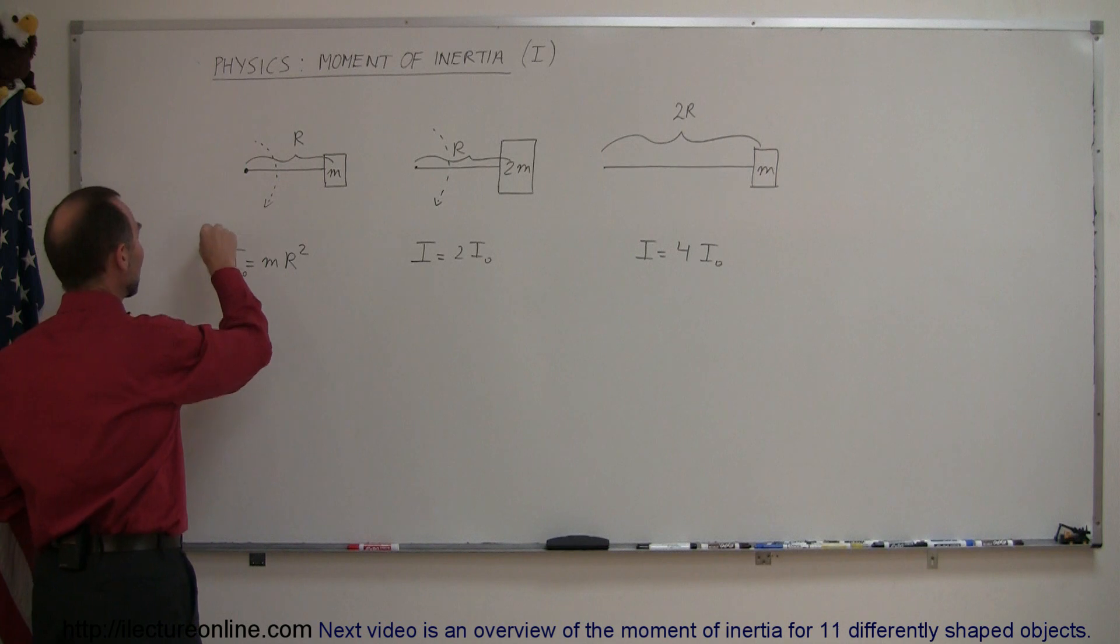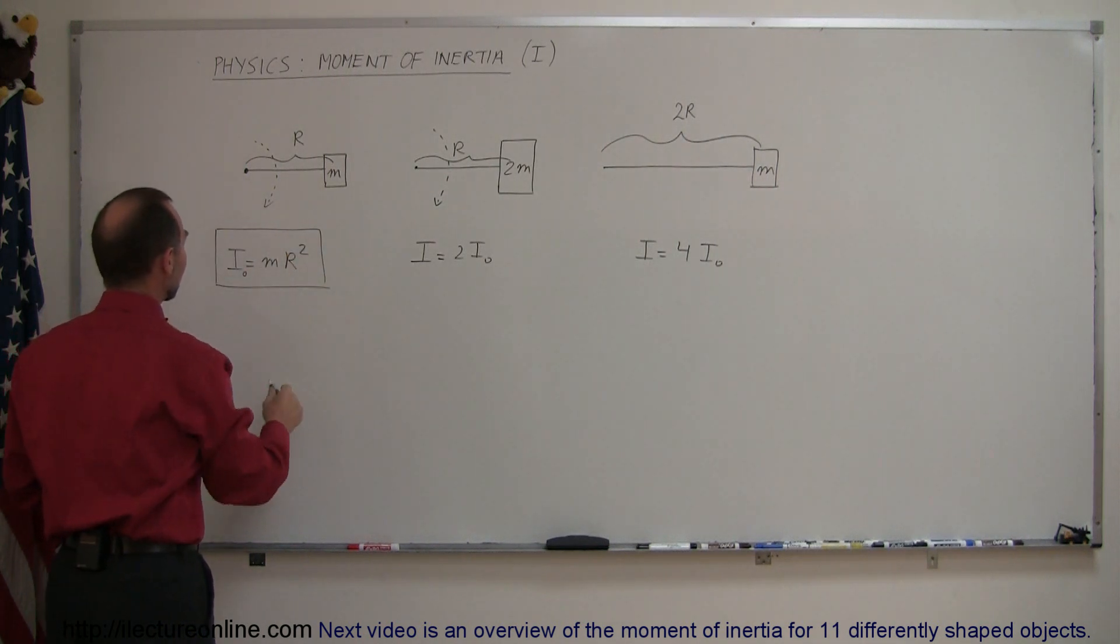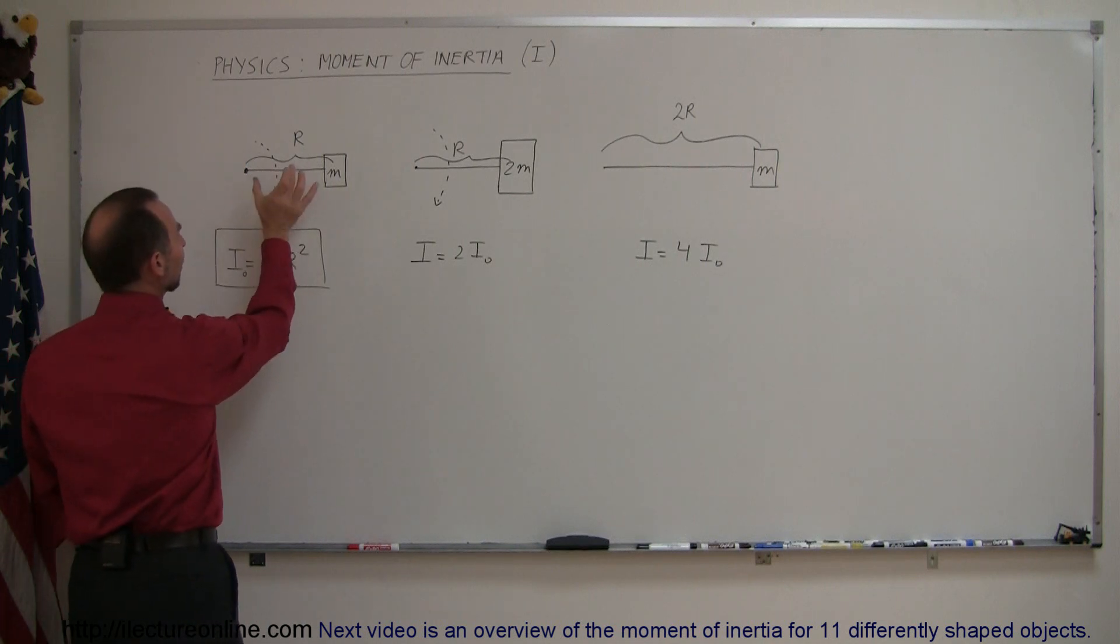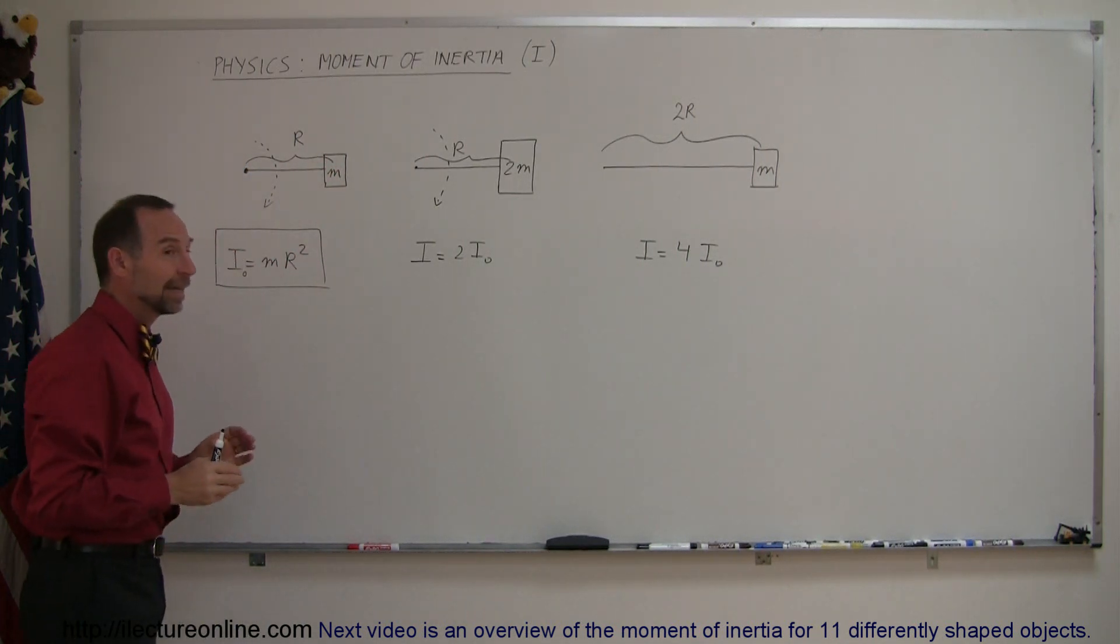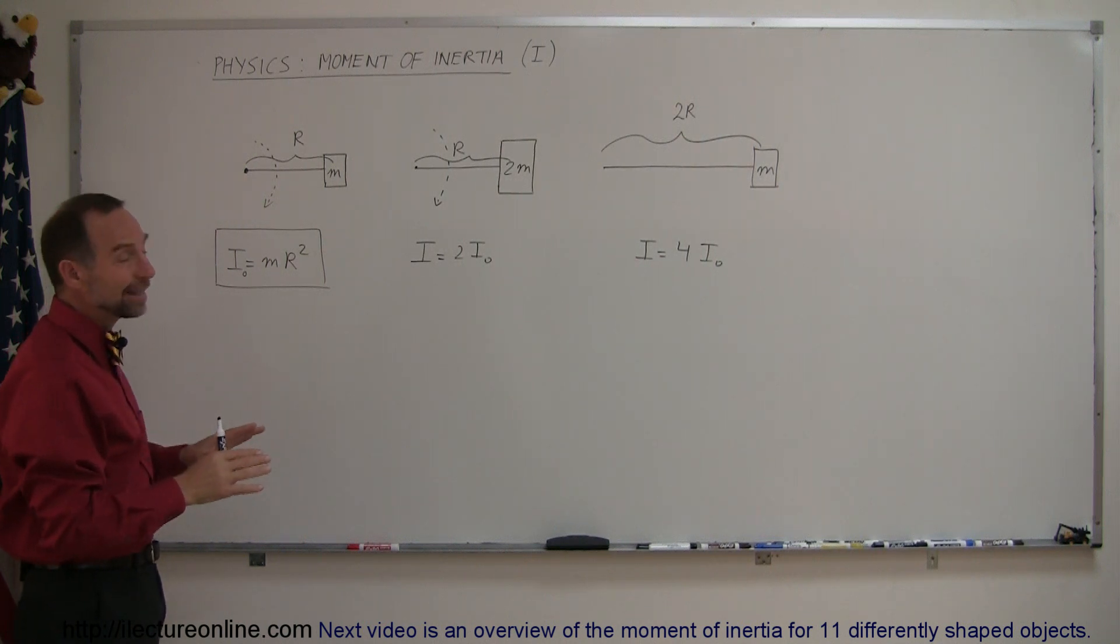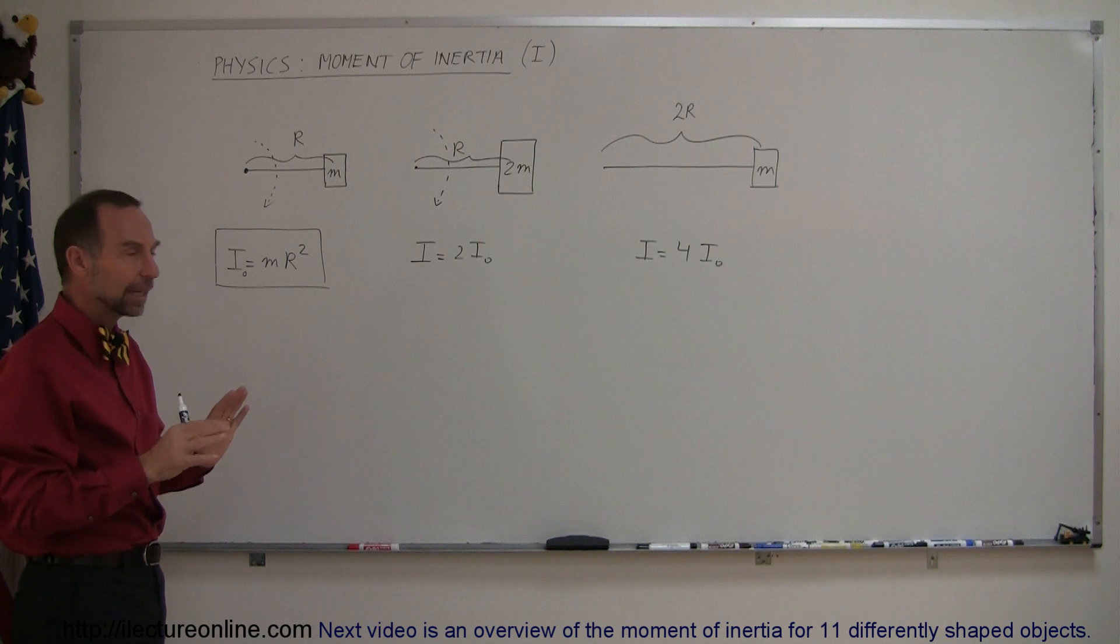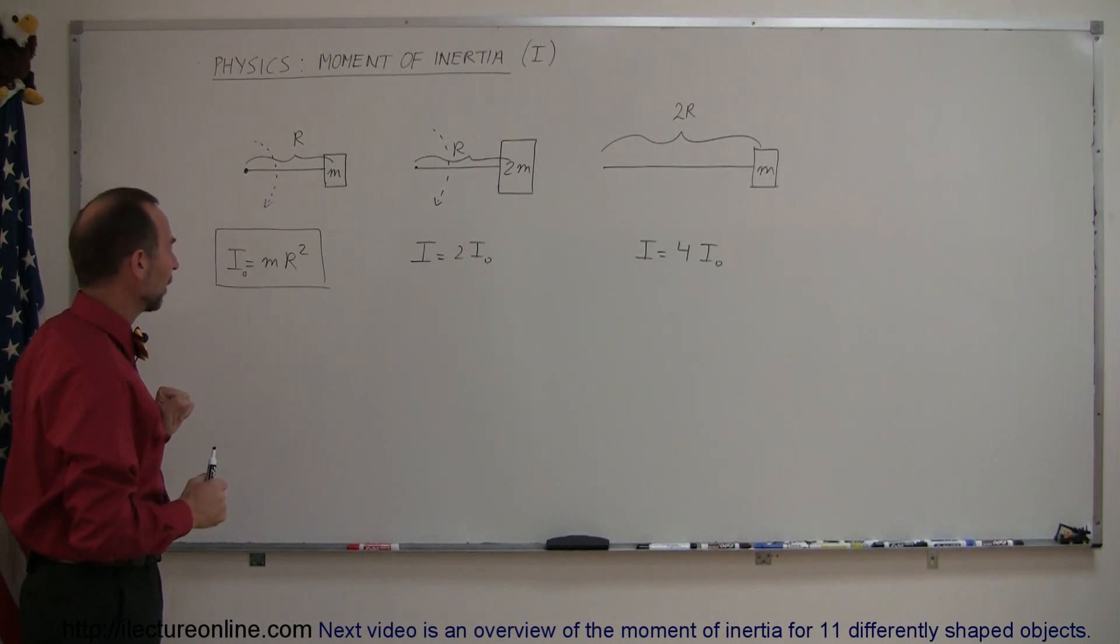The general equation always is that the moment of inertia of any object is mr squared. Of course, this only applies when all of the mass is located the distance r away from the point of rotation. If the mass is distributed in a different way, then we need to figure out what the moment of inertia is for that, but that comes later.